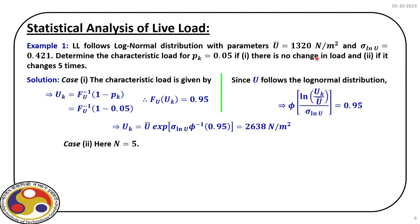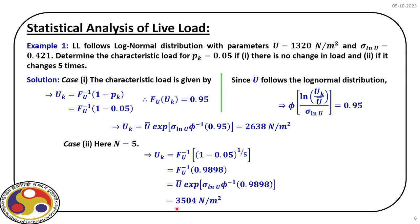If it changes five times, we use the same expression and in this case uk becomes 3504 N/m². This uk is a uniformly distributed load. We have identified the characteristic load for two different patterns of occupancy, and we can use this according to the load case to design the structure.